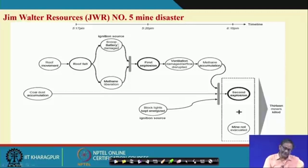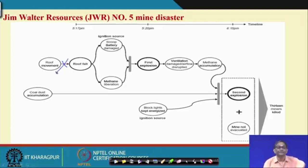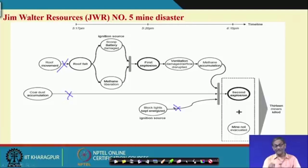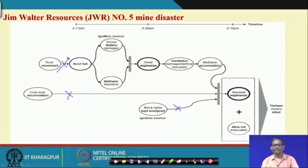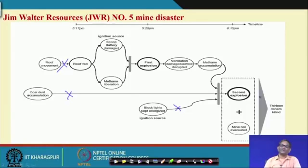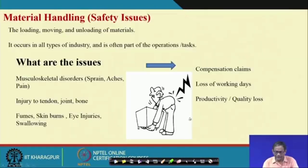After the first explosion, ventilation was damaged and air flow disrupted, methane accumulated, coal dust accumulated, a blocked light kept providing an ignition source, and a second huge explosion took place. The mine could not be evacuated and 13 miners were killed. This is a purely safety engineering problem — roof strata movement, a rock mechanics issue affecting support system design. If any one of those contributing factors had been eliminated, the accident might not have happened: starting from hazard to accident.